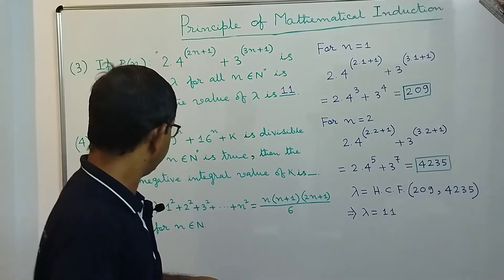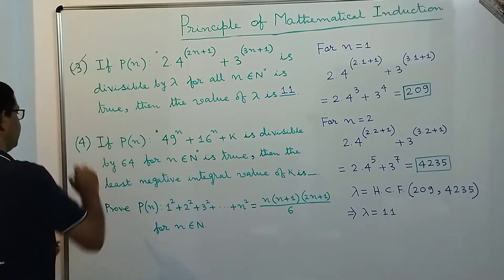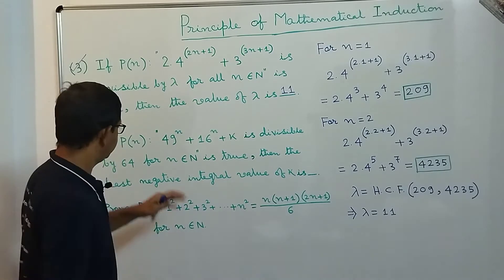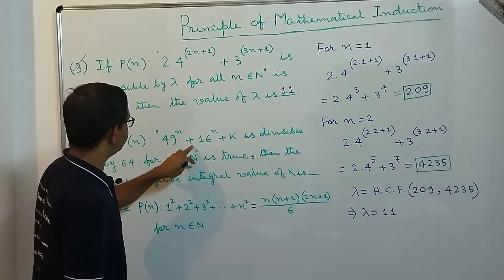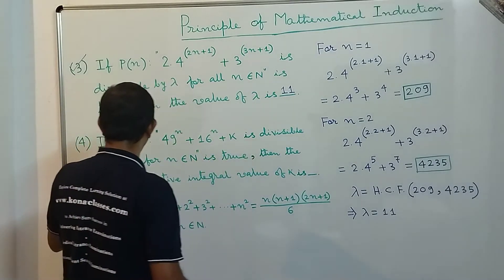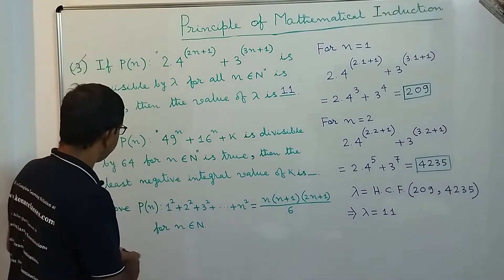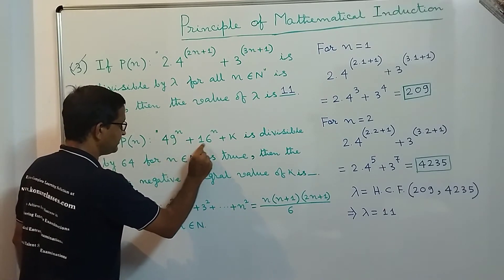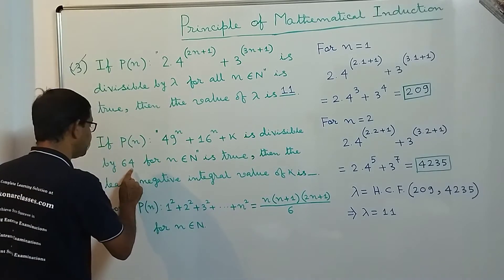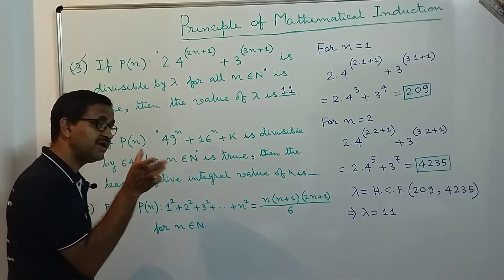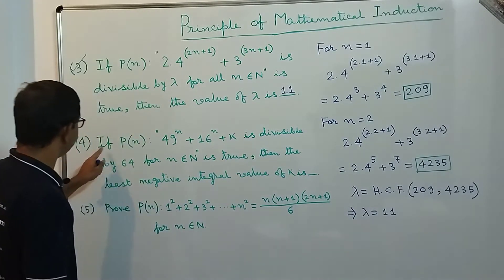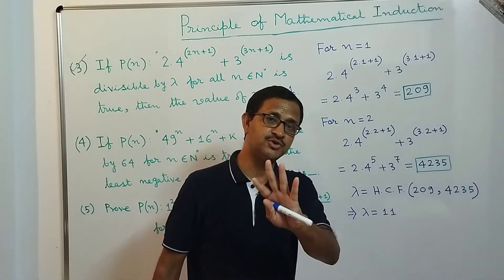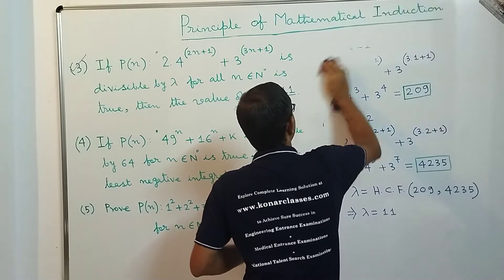Question 3 is done. Now let's look into question 4: if P(n): 49^n + 16n + k is divisible by 64 for n ∈ ℕ is true, then the least negative integral value of k is what? Let's see how we can approach this.